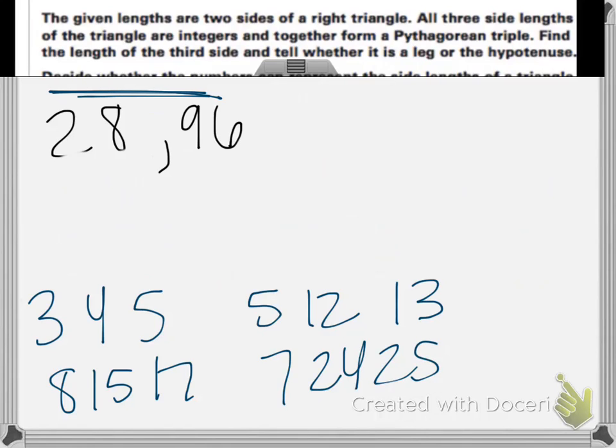So we are given two sides of a right triangle. All three side lengths of the triangle are integers and together form a Pythagorean triple. We need to find the length of the third side and tell whether it is a leg or the hypotenuse. So the first thing you want to do is find all the divisors of the smallest number.